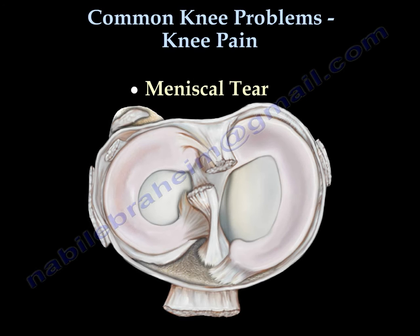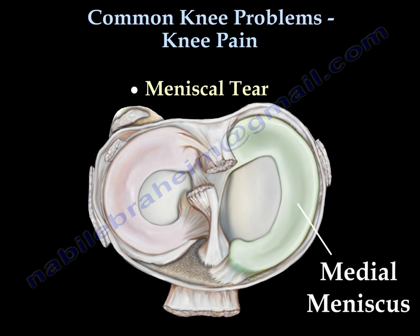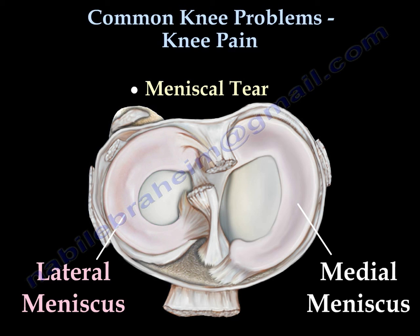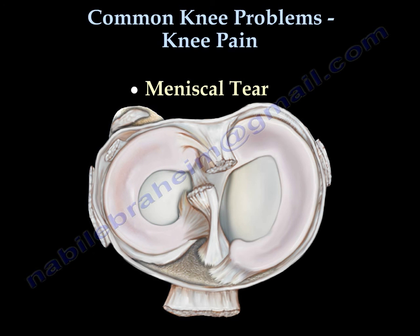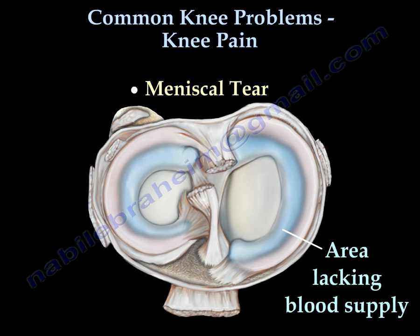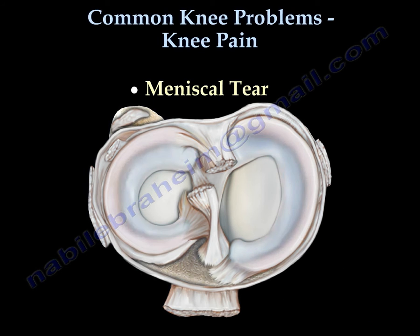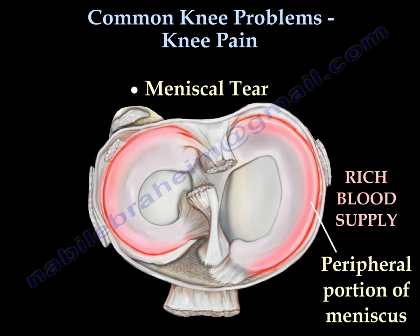Meniscal tear. This is the medial meniscus and this is the lateral meniscus. The inner part of the meniscus lacks blood supply and cannot heal by itself. The outer area of the meniscus is rich in blood supply, so if there is a peripheral tear in this area and it is sutured, it can heal.